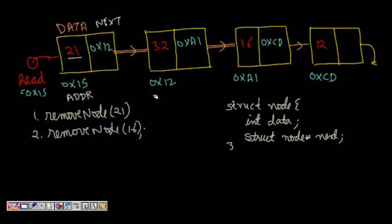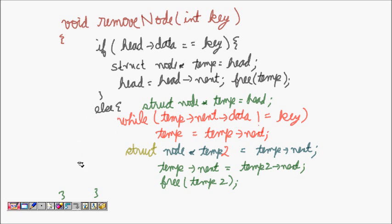The code consists of several cases. The first and most trivial case is if the linked list is empty — if head is null, we don't need to do anything. The next case is that the first node itself is the node we want to delete. The third case is that some other node (not the first) is the one we want to delete.